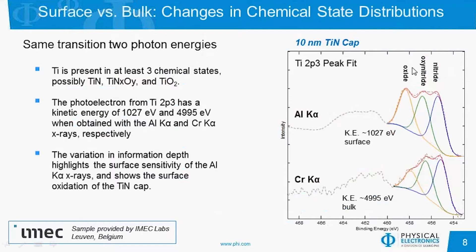Although the transition is the same, the photoelectron kinetic energy is very different due to the photon energy of the two X-ray sources. With the traditional aluminum K-alpha source, the kinetic energy is 1,027 eV — a more surface-sensitive kinetic energy. With the chromium K-alpha X-ray source, the kinetic energy is about 5,000 eV, which is more sensitive to the bulk material. With the more surface-sensitive spectrum, the oxide is about as intense as the other two chemical states, whereas with the more bulk-sensitive source it is lower in intensity, indicating that the oxide is more towards the surface of the sample.